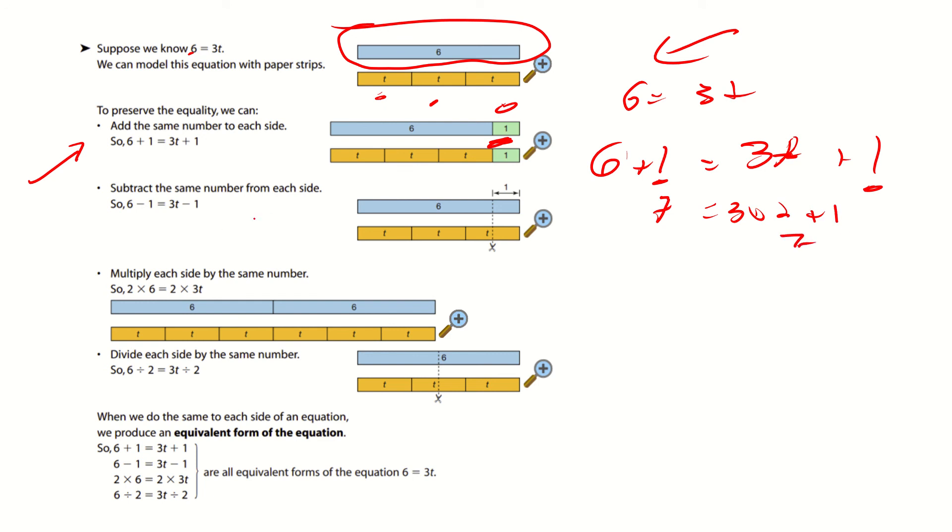To subtract the same number from each side. So, it says 6 minus 1 equals 3t minus 1. So, what we would do is we'd go like this with our 6, we'd get rid of 1, and here, we'd get rid of one of these. So, our answer would be 5 here, and here, it would be 3 times 2 minus 1, which is 5. So, really, the only thing you're doing here is you're trying to find out what are two equal equations by just adding, subtracting, dividing, or multiplying something to both sides.